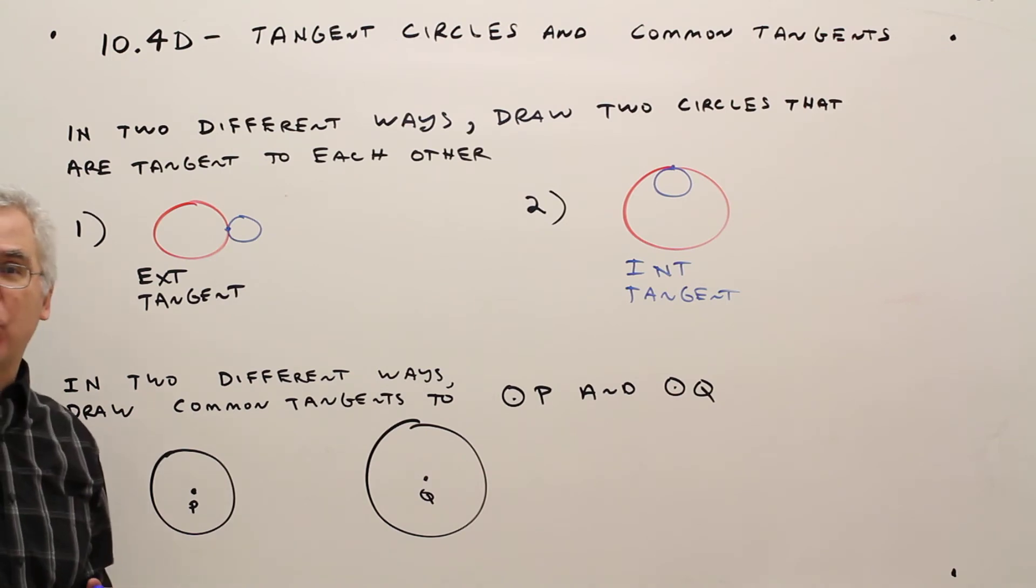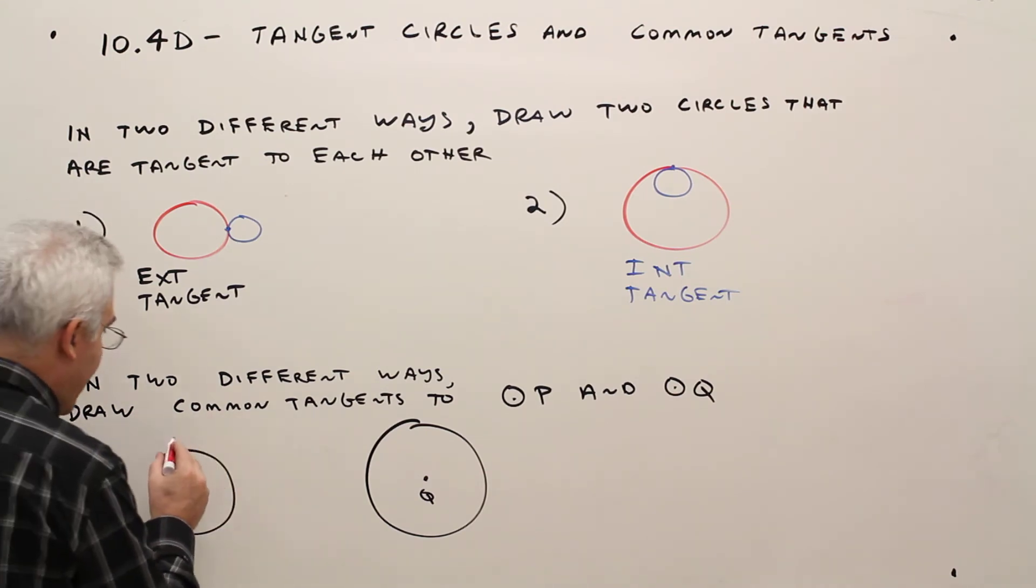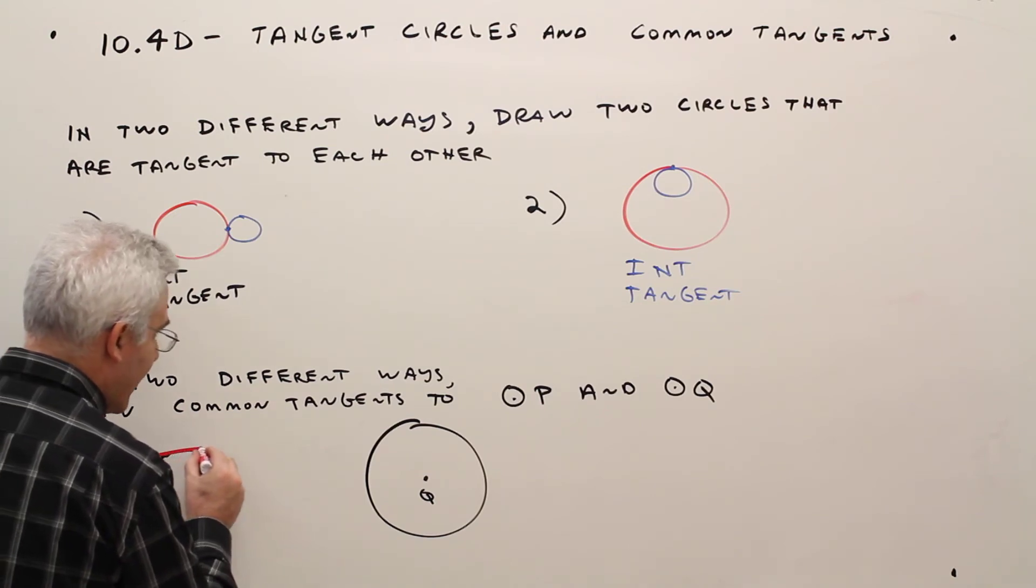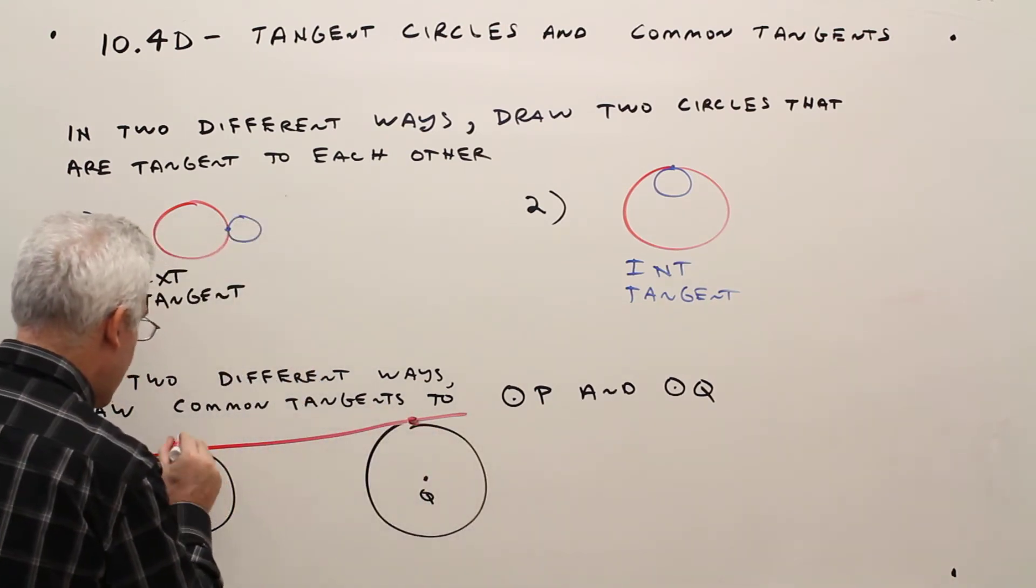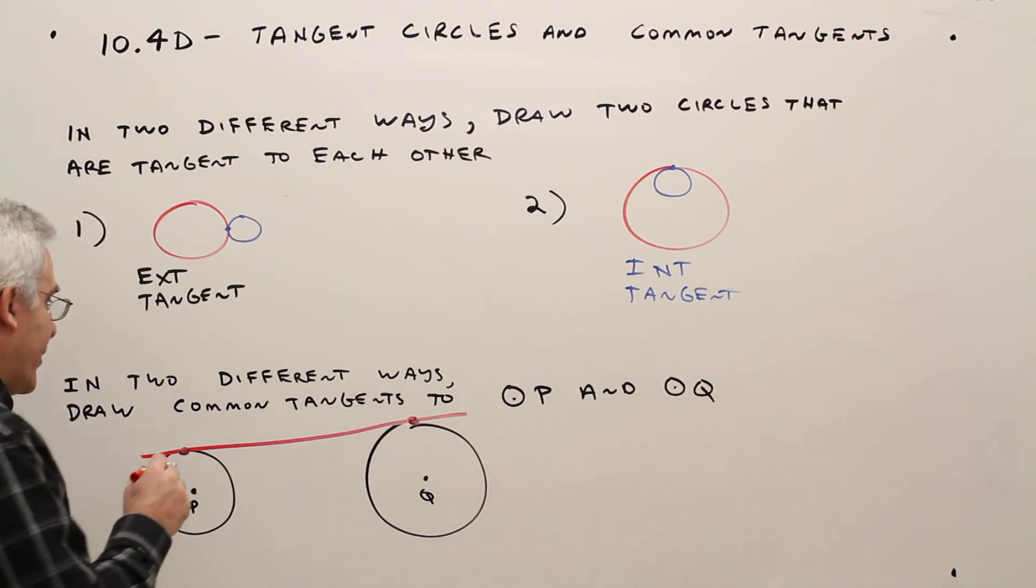And we want to draw them in two different ways. Alright, again, most people would think of a common tangent segment, perhaps like that. We would call that an external common tangent.